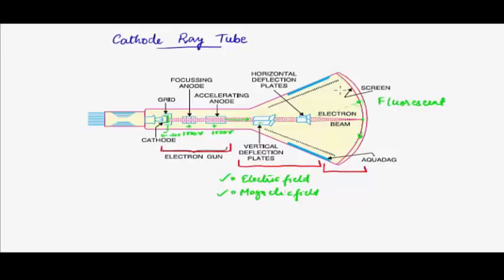A simple everyday use of the cathode ray tube is the TV screen. In the past, before LEDs, television screens were mainly made out of cathode ray tubes. There are also many uses in the experimental and scientific community to measure different signals — by specifying unknown potentials at different anodes while keeping all other parameters fixed, one can find the nature of the signal being applied, since that variable leads to different brightness at different screen positions.